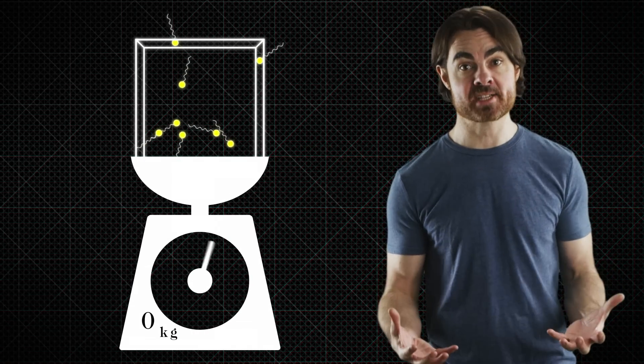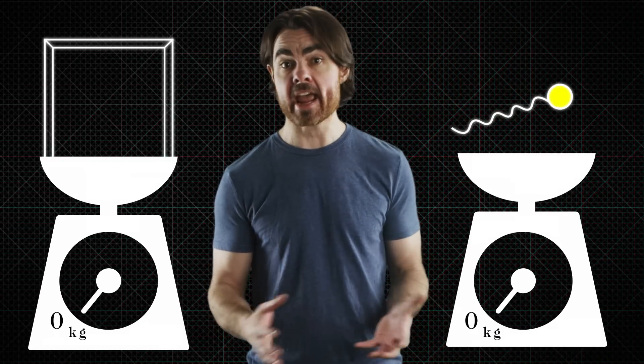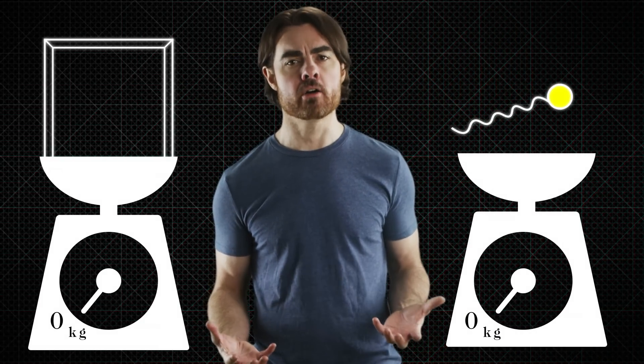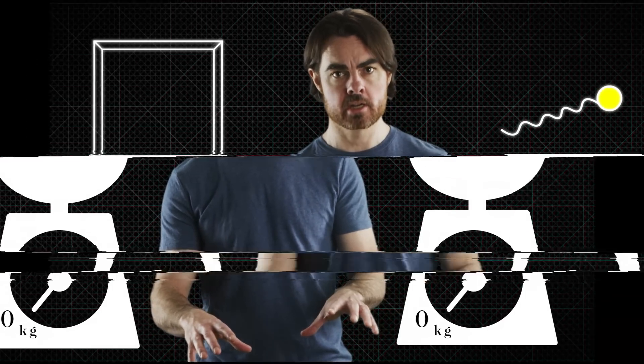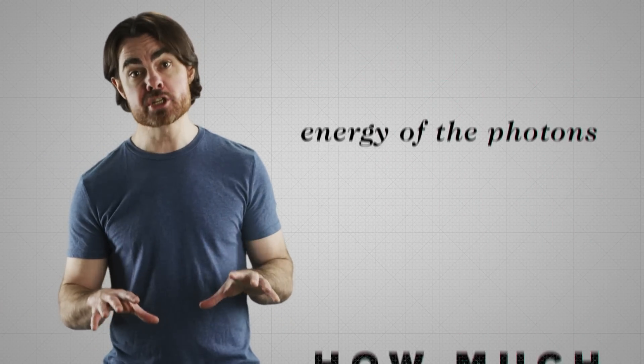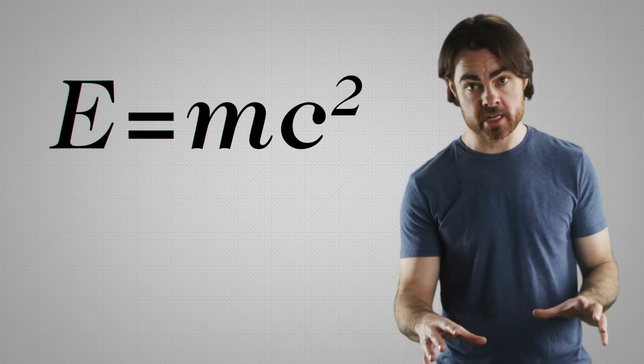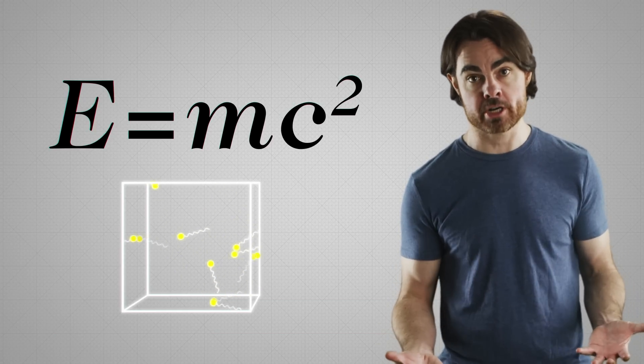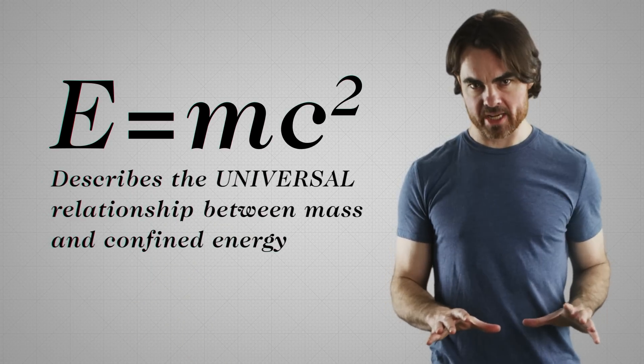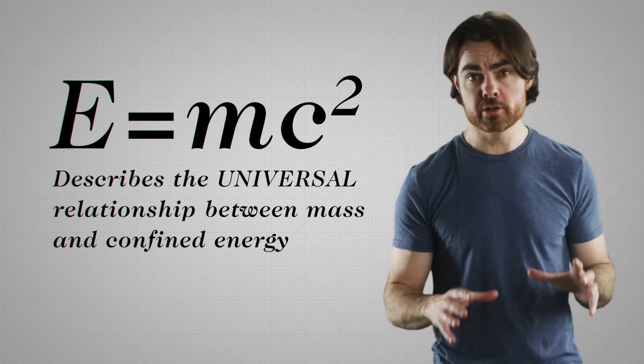The photon box is massive, even though none of its components, not the photons, not the walls, have any mass. Somehow, mass arises in the ensemble, where it doesn't exist in the parts. How much mass does the box have? It's the energy of the photons divided by the square of the speed of those photons. And you can derive the famous E equals mc squared just by looking at how momentum transfers between the photons and the box under acceleration. But E equals mc squared describes the universal relationship between mass and confined energy, not just confined photons.